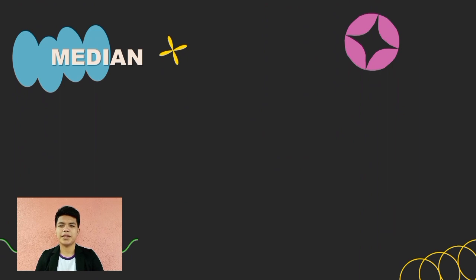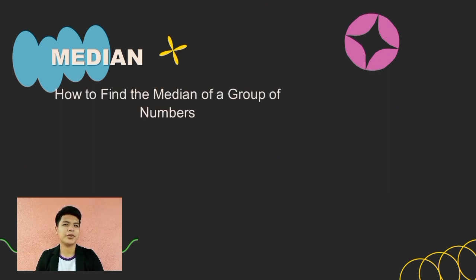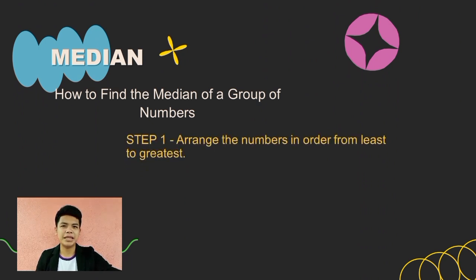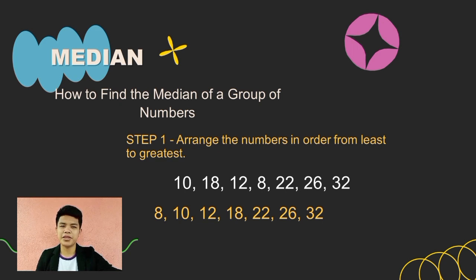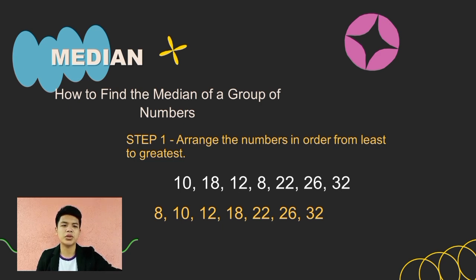Now let's discuss how to find the median of a group of numbers. Step 1: arrange the numbers in order from least to greatest. Let's take this example: 10, 18, 12, 8, 22, 26, and 32. Step 1 — we arrange the numbers: 8, 10, 12, 18, 22, 26, 32, arranging them from least to greatest.